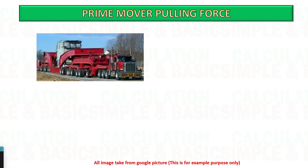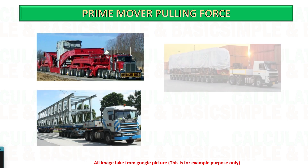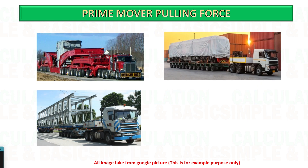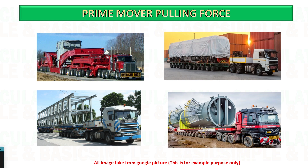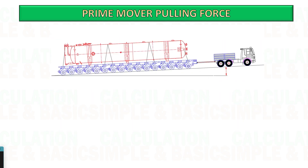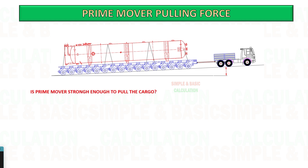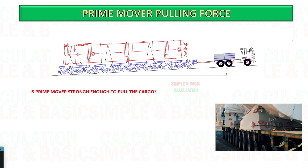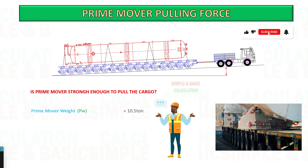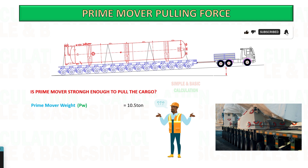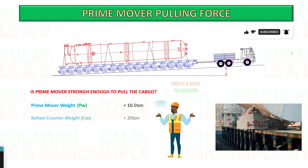Here are sample images for towing heavy cargo using a prime mover. In this example, you are assigned to transport a 200-ton cargo from location A to location B, and your current prime mover has a maximum driven axle of 38 tons with a ballast counterweight of 20 tons.